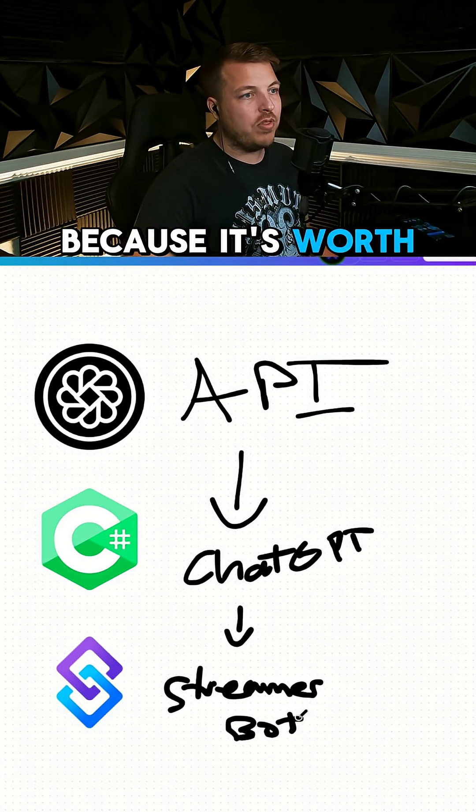Next, we're going to pull up StreamerBot. StreamerBot is this program down here. What you're going to do is go to actions and make something called ChatGPT.ask. It's going to be triggered with a command — that command is going to be exclamation point ask.